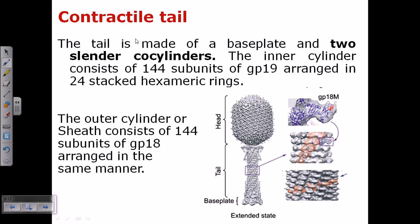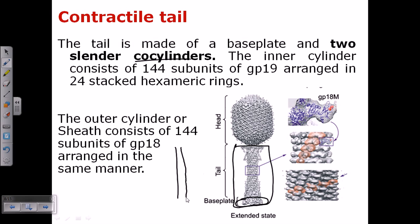The contractile tail of T4 phage is composed of two important parts: the tail itself and the base plate at the bottom. The tail is made up of a base plate and two co-axial cylinders. The inner cylinder is a hollow tube-like structure, and surrounding it is an arrangement of contractile ring proteins. The outer ring is contractile in nature.